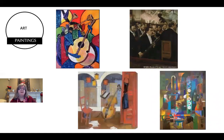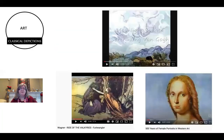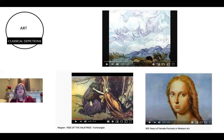Art ties in so well to music class. I love using paintings — if only for students to enjoy and appreciate the art, but also to draw from the artwork: what instruments do you see, and how do we play those instruments? I might show them a picture and ask them to write a story about what happened before and after it. I also use classical music to introduce artwork, for example the Moonlight Sonata with Van Gogh's paintings, Wagner's music with some paintings, and a Bach piece accompanying 500 years of female portraits in Western art.